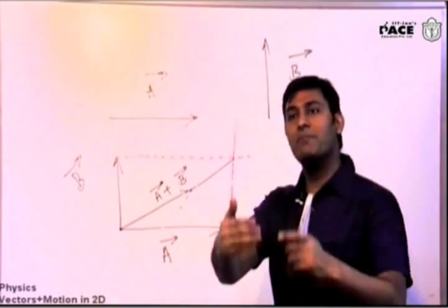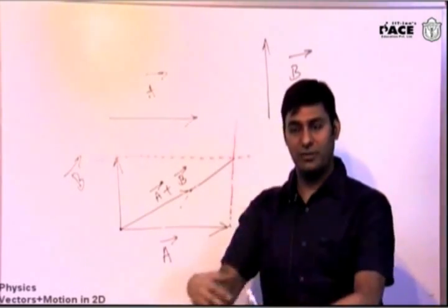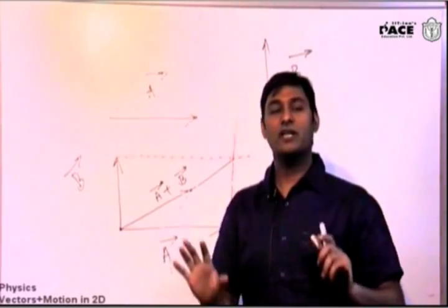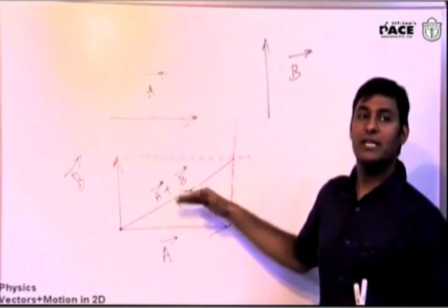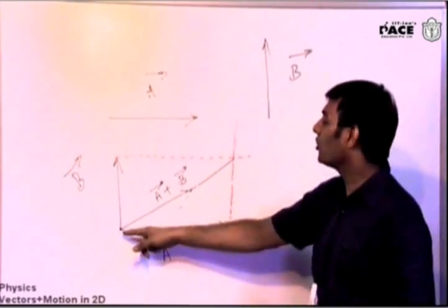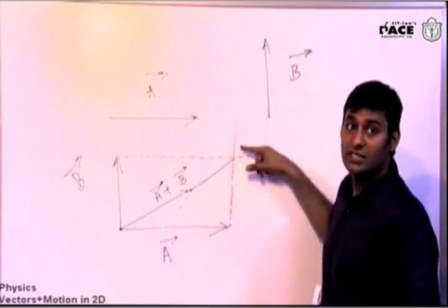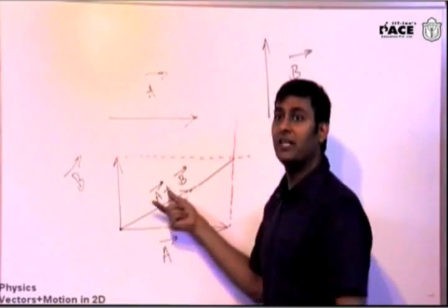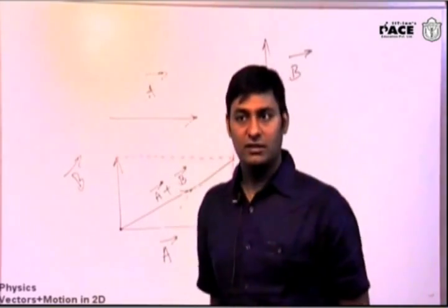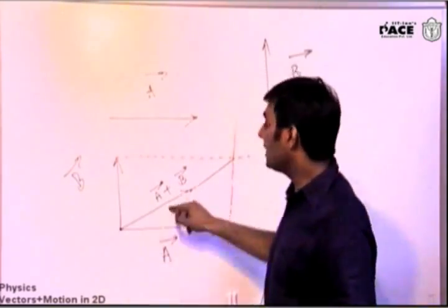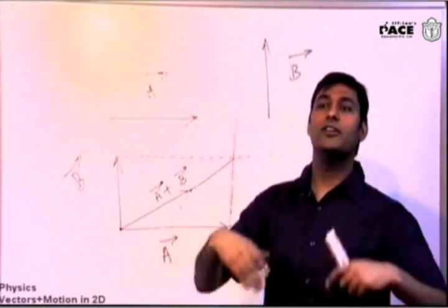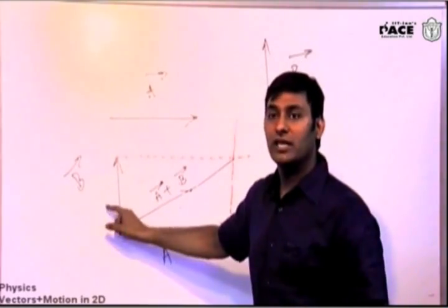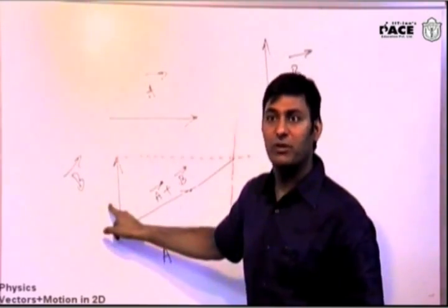There are two diagonals in the parallelogram — be careful which one you use. The diagonal starting from the common tail represents A plus B; the other diagonal will relate to A minus B. Subtraction is a byproduct — just reverse the direction of the vector to subtract. This is all graphical: draw to scale, measure the third side with a ruler, multiply by your scale factor, and you get the magnitude of the resultant. The direction is also visible on the paper.